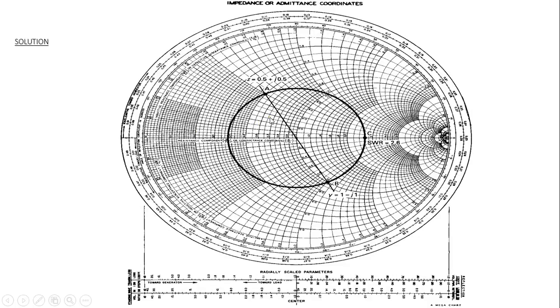This is the example solution: Point A is at 0.5 plus j0.5, and point B is at 1 minus j1. This circle intersects the resistance line at point C, which is the SWR point with value 2.6.